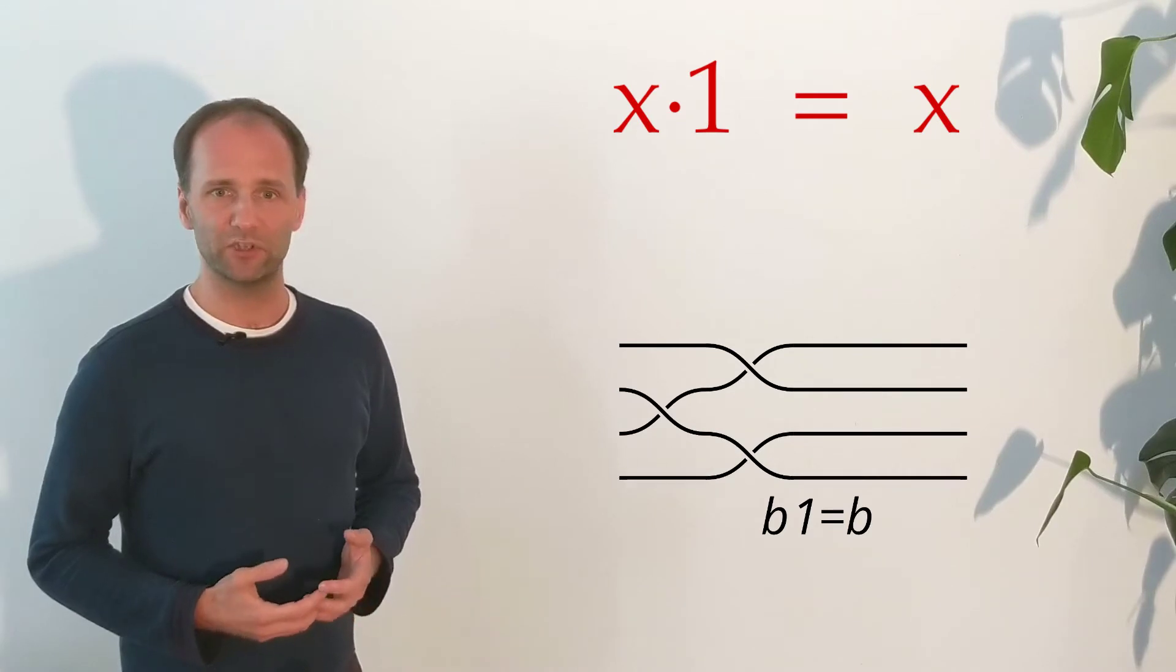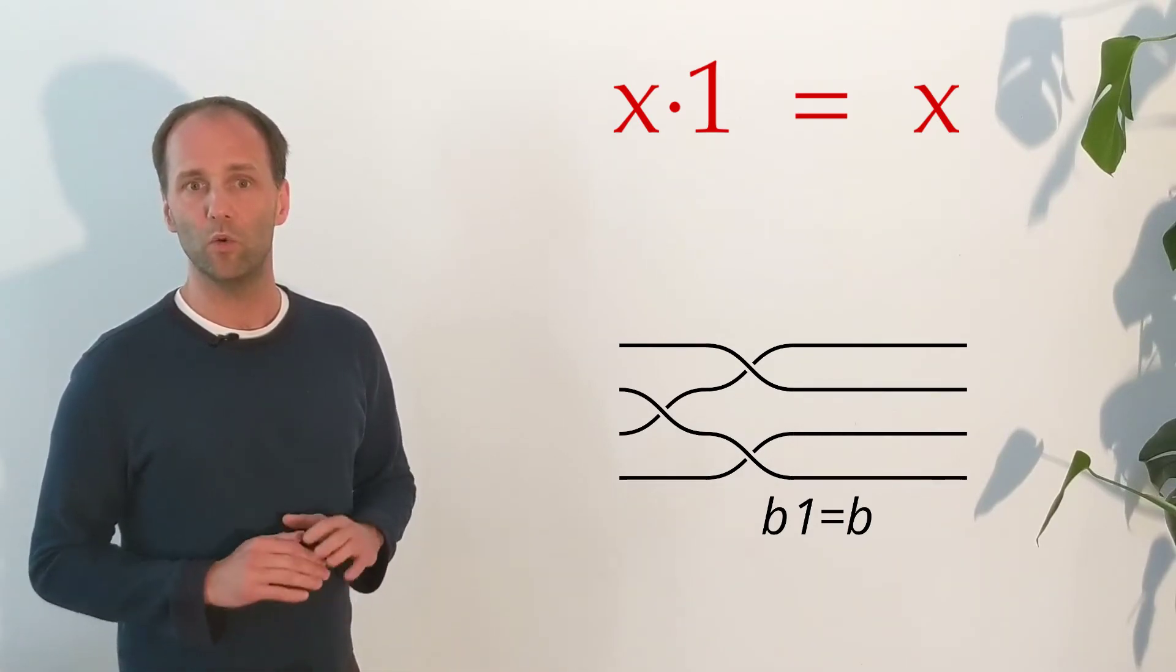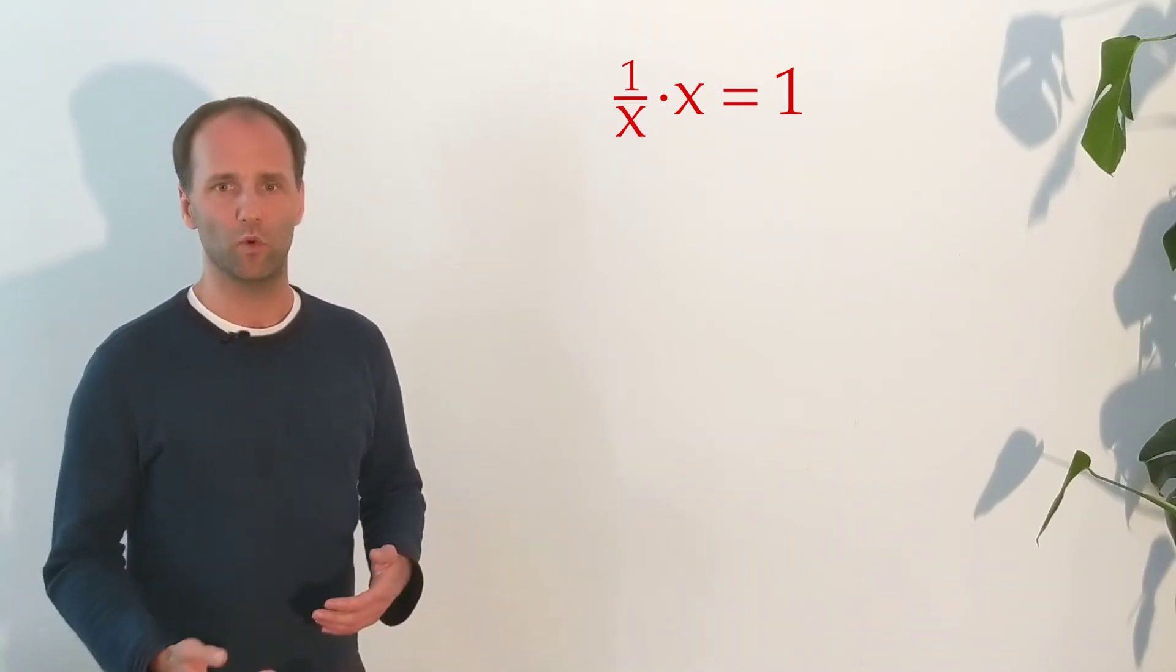We therefore refer to the special braid with no crossings as the identity braid or simply 1. You can also divide by braids. Dividing by a number X is the same as multiplying with 1 over X and X times 1 over X is 1.